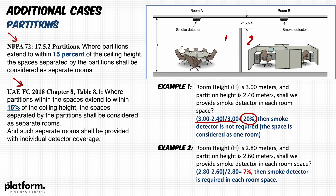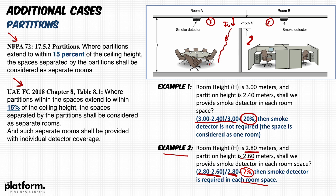Example two: room height 2.8 meters, partition height 2.6 meters. Calculation: (2.8 - 2.6) / 2.8 = 7%, which is less than 15%. Therefore a smoke detector shall be provided in each individual room or partitioned space, since smoke may not easily travel across the partition gap. The NFPA rule is: if the partition extends to within 15% of the ceiling height, treat each space as a separate room and provide individual detectors.